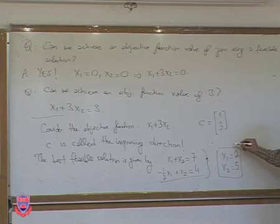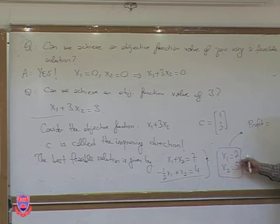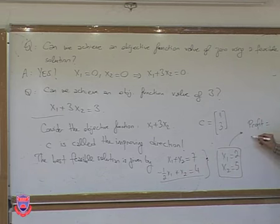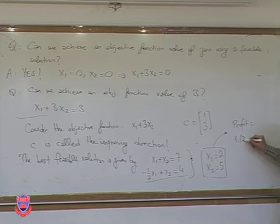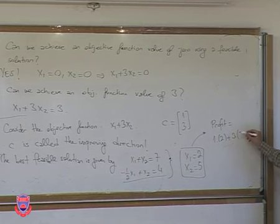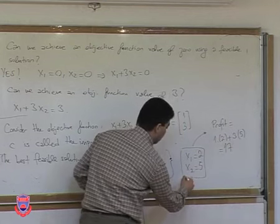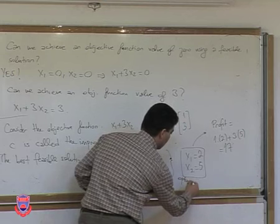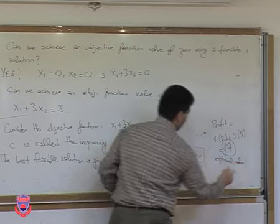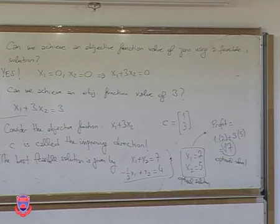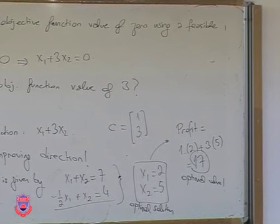How can I figure out the coordinates of this optimal point? It's given by the intersection of two lines — I need to solve two equations with two unknowns. The first is x1 plus x2 equals 7, and the second is minus 1/2 x1 plus x2 equals 4. Solving simultaneously gives x1 equals 2 and x2 equals 5. The corresponding profit is 1 times 2 plus 3 times 5 equals 17. So the optimal solution is x1=2, x2=5 and the optimal value is 17.